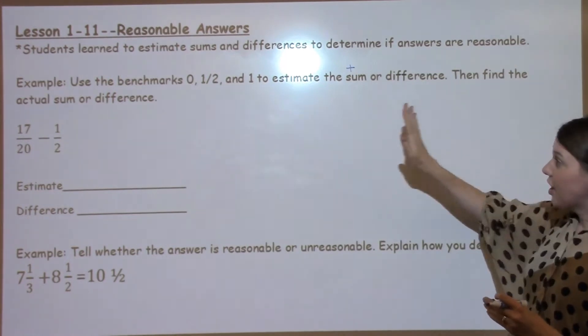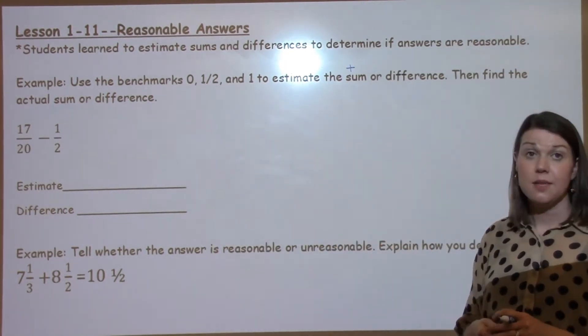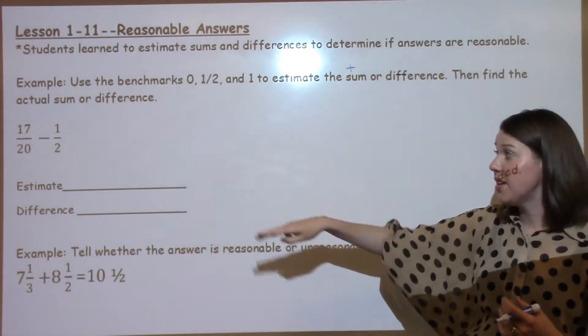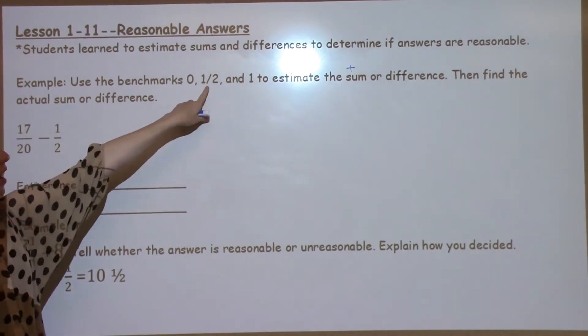And then we also need to find the actual sum or difference in these problems. So our first problem says 17 20ths minus 1 half. The first thing we have to do is find our estimate. So looking at 17 20ths, I need to decide, is that closer to 0, 1 half, or 1 whole?